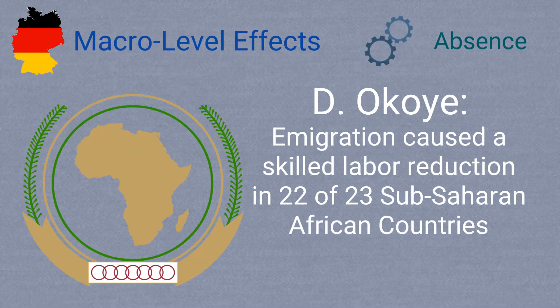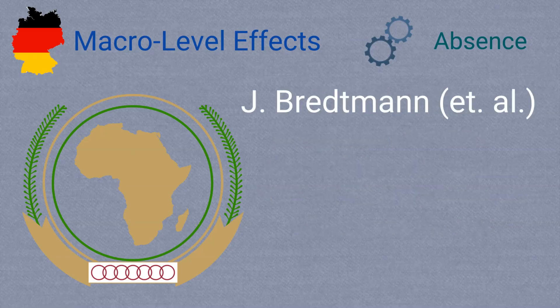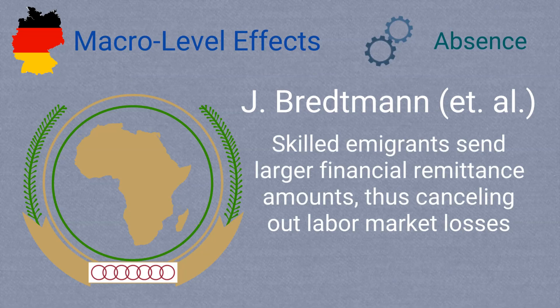However, another sub-Saharan African study conducted by Julia Bredman and her team uncovered that those same highly skilled immigrants typically sent more remittance money back to their origin countries compared to lower-skilled migrants. This helped to cancel out any losses from emigration.